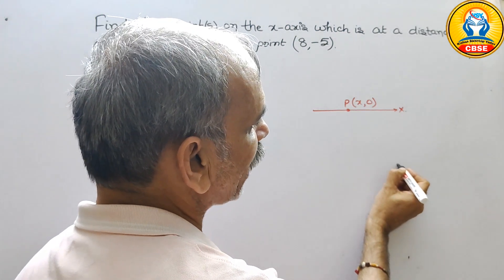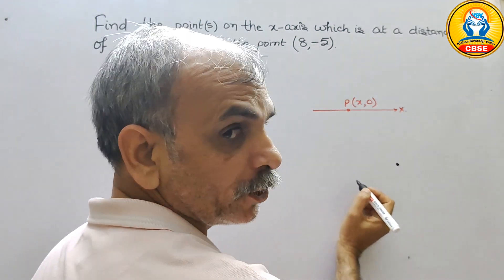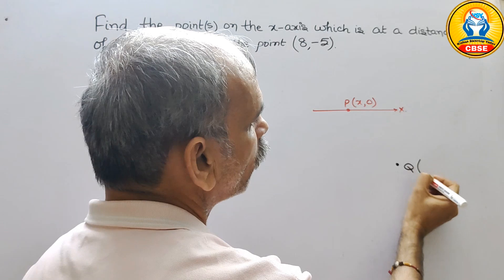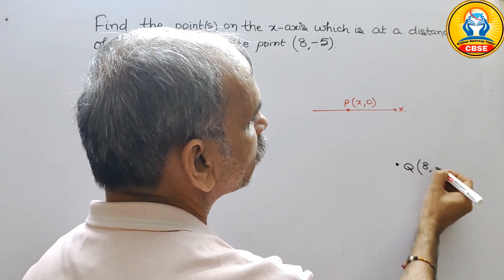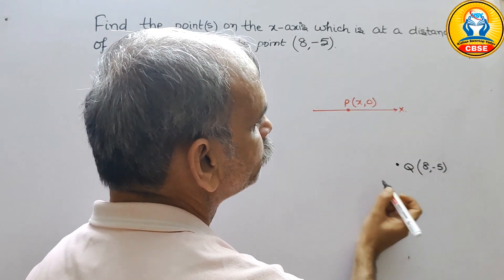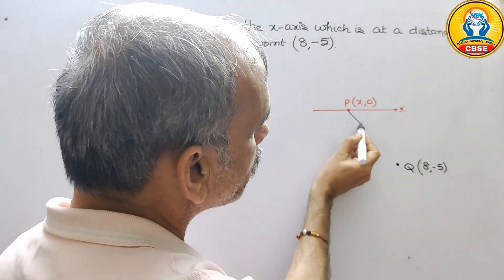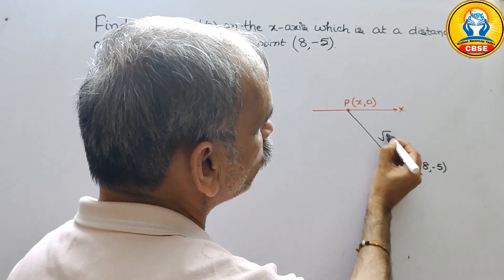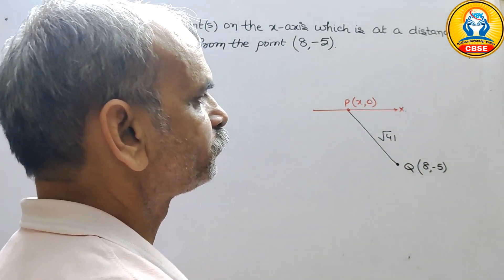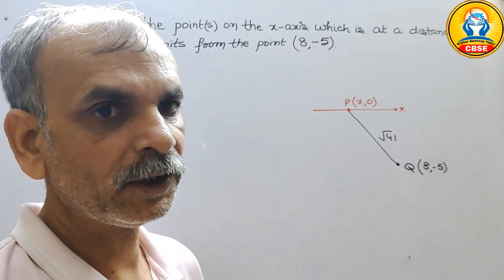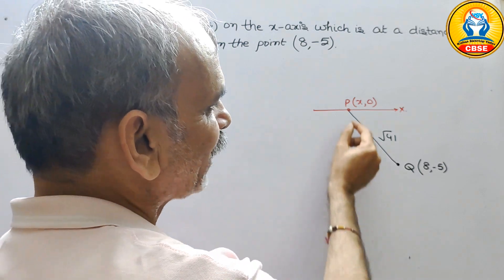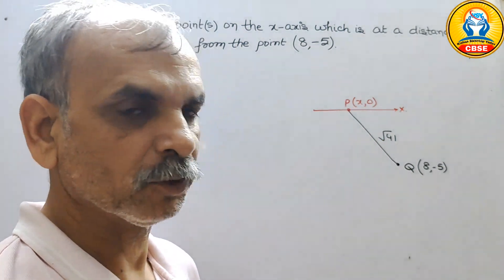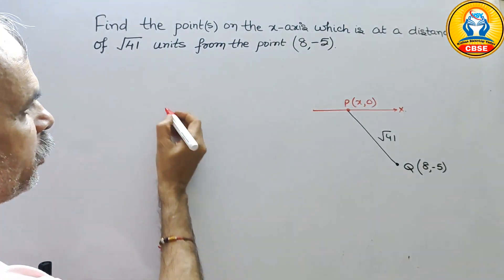Suppose (8, -5) हमारा यहां पर है, यह point तो this point is your Q, और Q की coordinate is (8, -5). दोनों को join करेंगे तो जो distance है, यह आपका root 41 units है। ठीक है, आपको X का coordinate निकालना है, तो distance formula: D is equal to